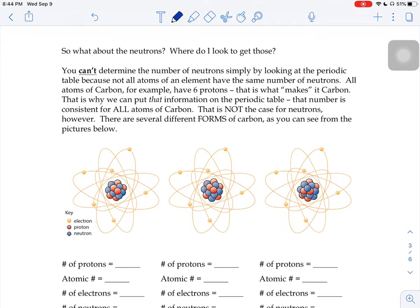So, we learned how to get our proton number, we learned how to get our electron number, but what about neutrons? Where do you look to get those?